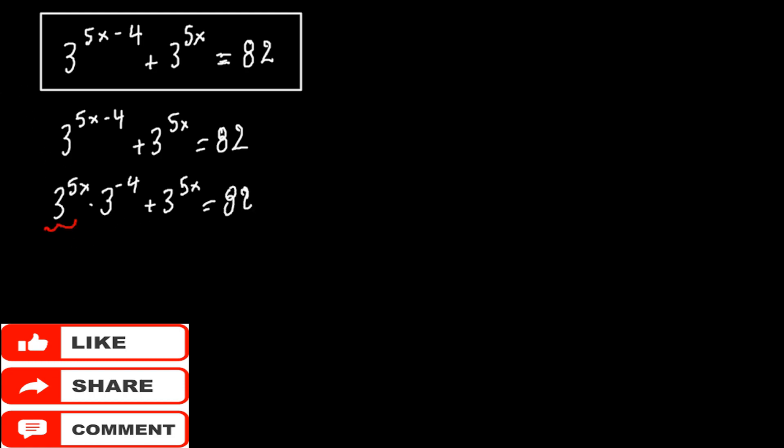Here we see we have 3 to the 5x as a common factor. So we have 3 to the 5x times 3 to the minus 4 plus 1 equals to 82.